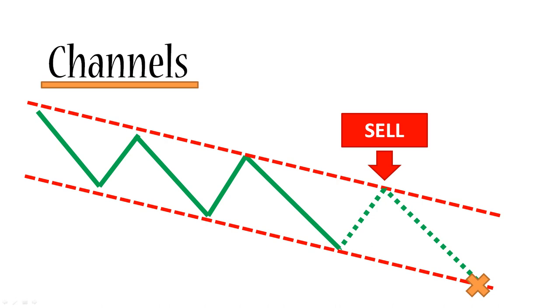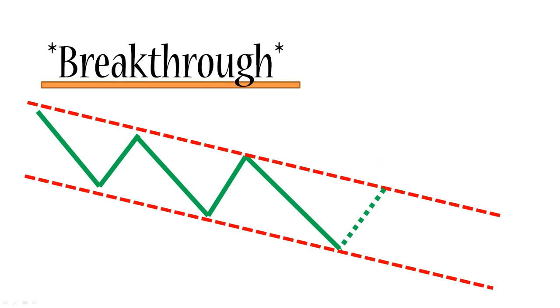But sooner or later, of course, the price will break the channel. And that's why there's an alternative strategy where in this case, instead of opening a sell order, you would open a buy order. And you would expect the price to go somewhere out of the channel. You would use this strategy when your other analysis is telling you that this channel is getting too old and the price is going to break through it.